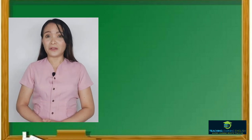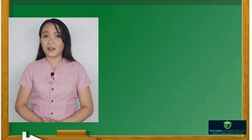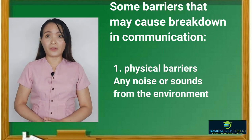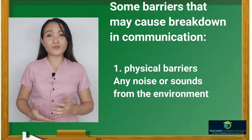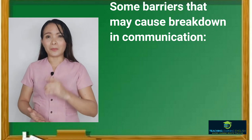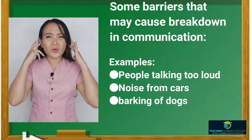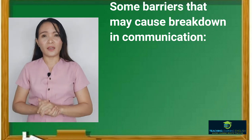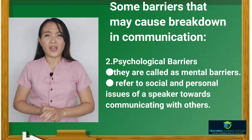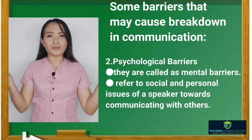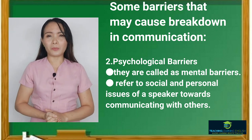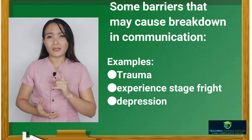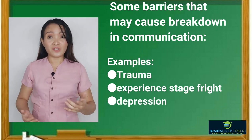Here are some barriers that may cause breakdown in communication. The first is physical barriers — any noise or sounds from the environment. Examples include people talking too loud, noise from cars, and barking of dogs. The second is psychological barriers, also called mental barriers. These refer to social and personal issues of a speaker towards communicating with others. Examples include trauma and stage fright.